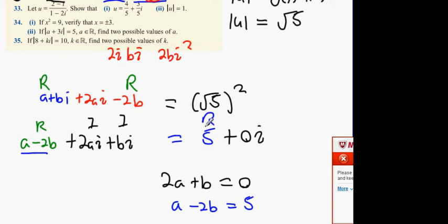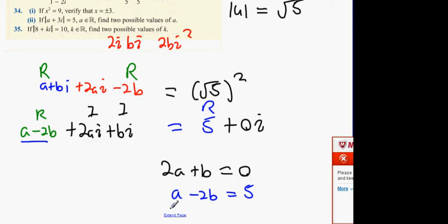Now guys, which letter would you like to get rid of? You can get rid of a if you want. I would recommend b because there's already a minus there. So if you multiply it by 2, you're going to get 4a plus 2b equals 0. You're going to get a minus 2b equals 5.